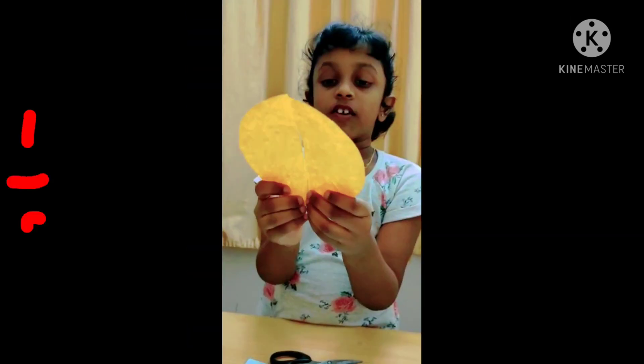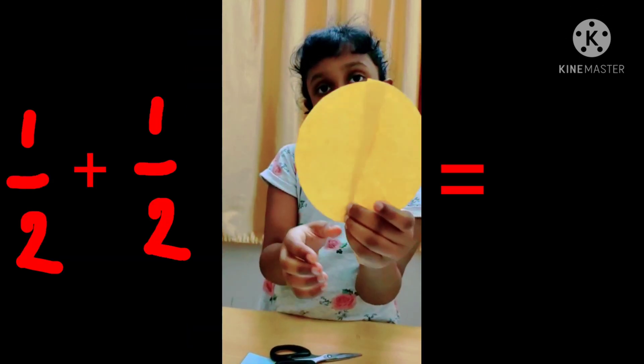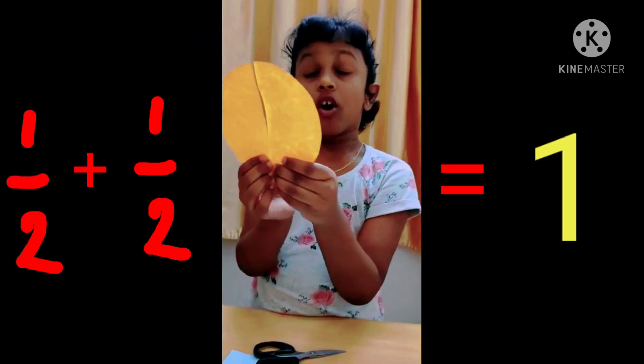Now this is half and this is another half. When you join two halves, you get one whole circle.